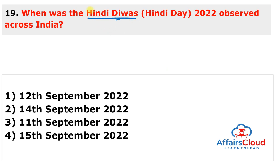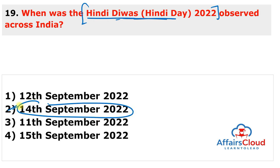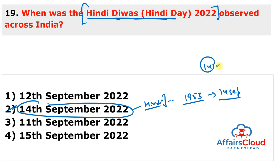Hindi Divas 2022 was observed across India on 14th September 2022 to mark the importance of the Hindi language. The first Hindi Day was observed in 1953 on 14th September. Prime Minister Pandit Jawaharlal Nehru declared the celebration of 14th September as Hindi Divas. Hindi was adopted as an official language of the Union of India on 14th September 1949, which is why this date is celebrated.